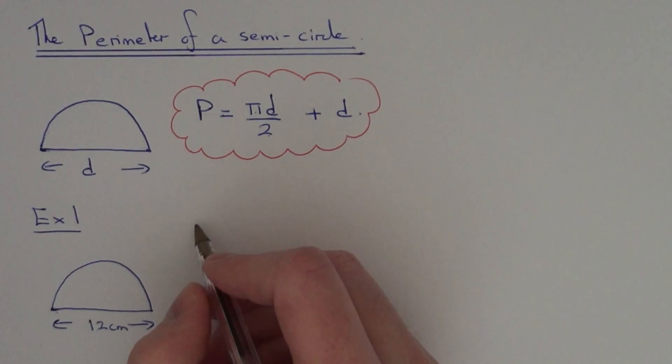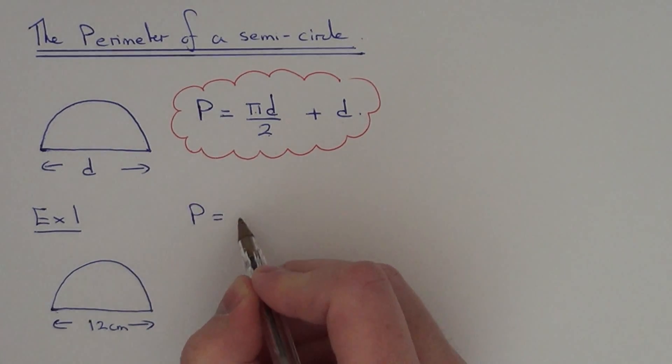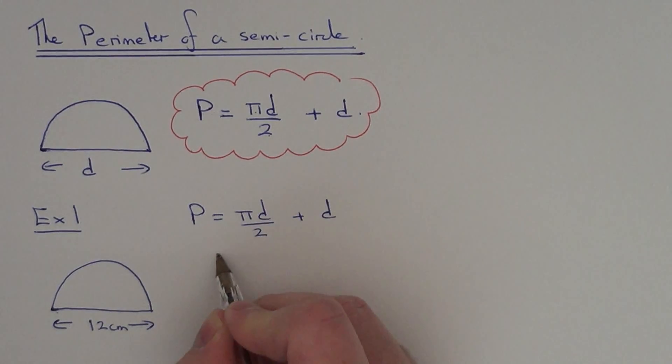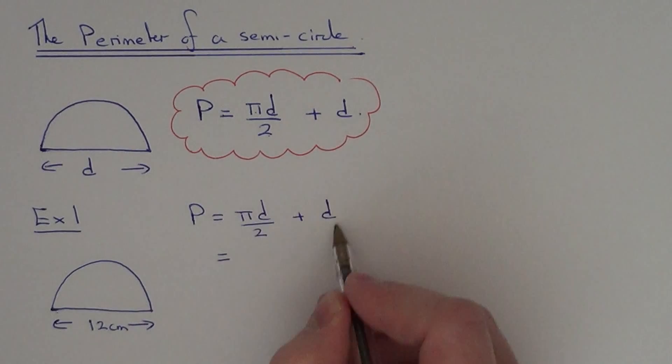So let's first of all copy our formula down. Perimeter equals pi times diameter divided by 2 plus your diameter. The diameter of this semicircle is 12cm, so if we substitute this into the formula...